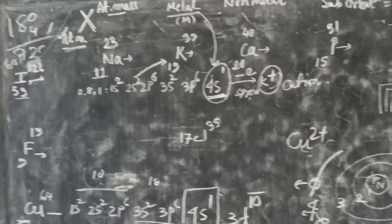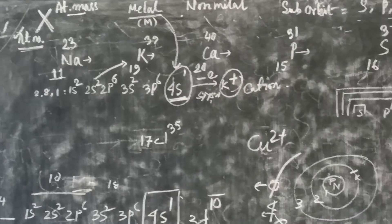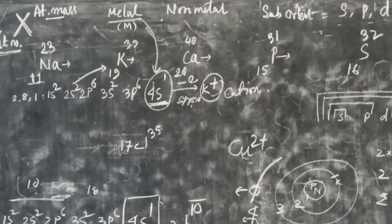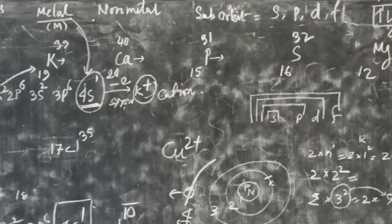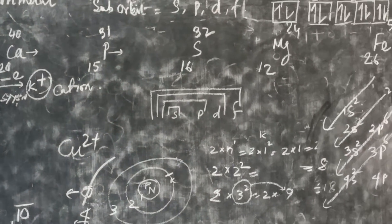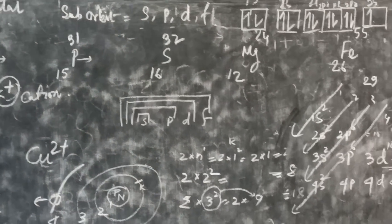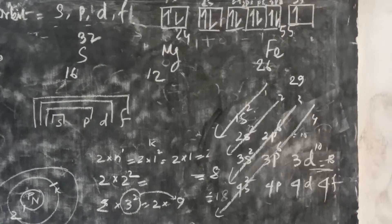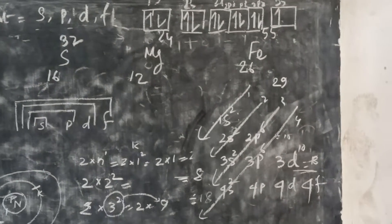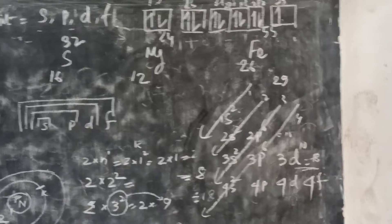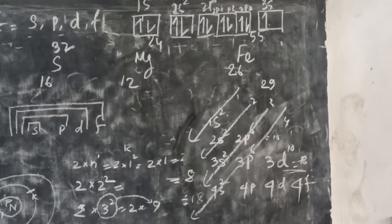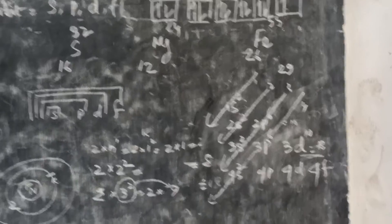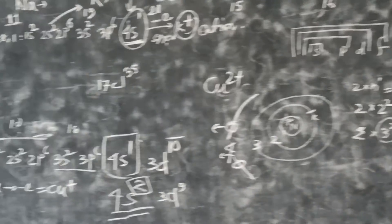Sodium 11, Na, 23. Potassium 19, K, 39. Calcium 20, Ca, 40. Phosphorus 15, P, 31. Sulfur 16, S, 32. Magnesium 12, Mg, 24. Ferrous iron 26, Fe, 55.